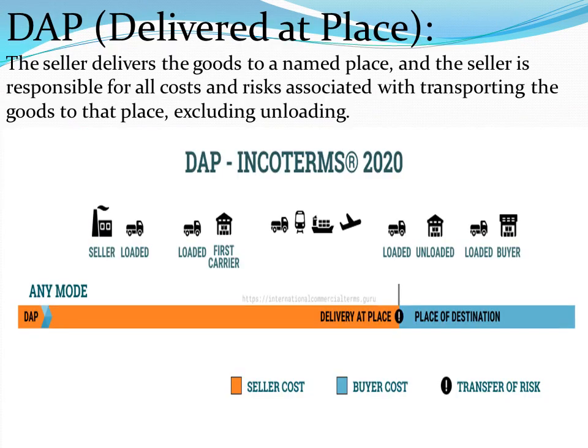DAP or Delivered at Place: Under this term the seller delivers the goods to a named place and the seller is responsible for all costs and risks associated with transporting the goods to that place, excluding unloading.